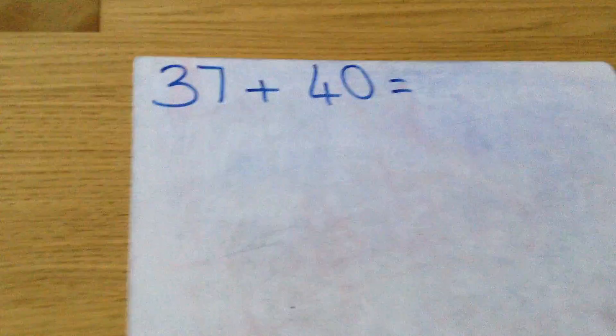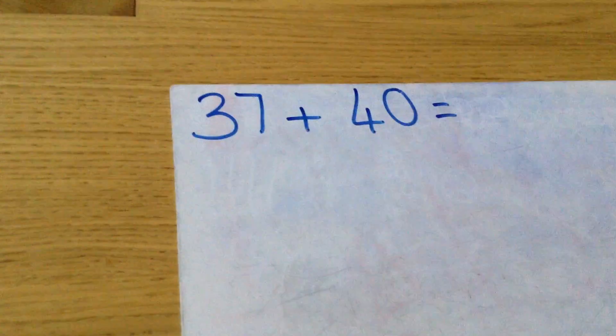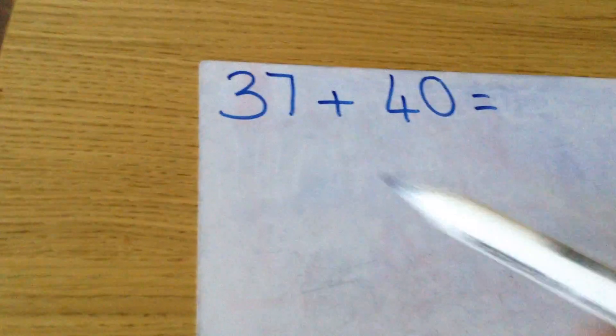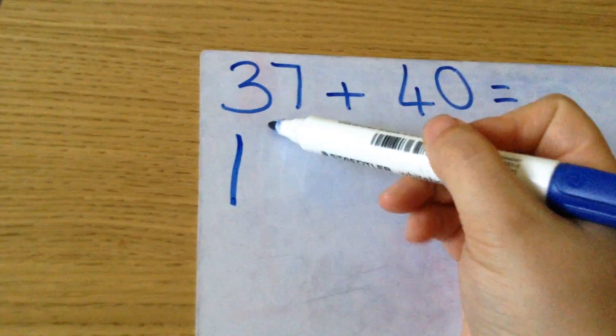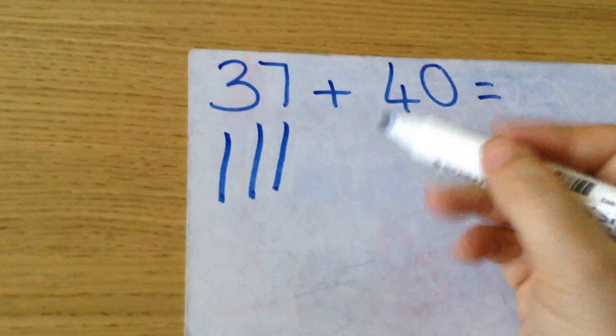Now we're going to add a two-digit number and tens. Okay, so I'm going to look at the first number. I've got 37. It's got three tens and seven ones.